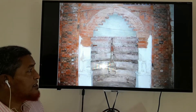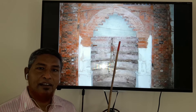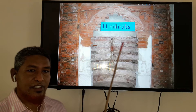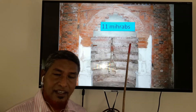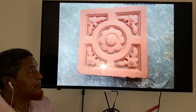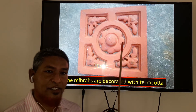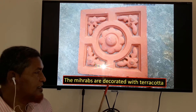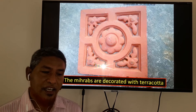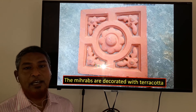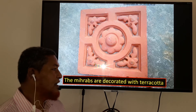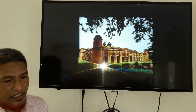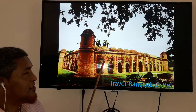Here we can see the mihrab. Can you tell me how many mihrabs are in this mosque? Yes — the mosque has 11 mihrabs. The mihrabs are decorated with terracotta design. Every mihrab is beautifully decorated with architectural terracotta.